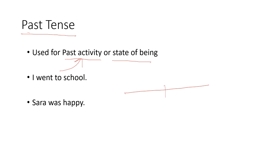If this is now, this is past, and this is future, then I went to school before now — somewhere here. It could be yesterday, it could be the day before yesterday, or any time which is past.